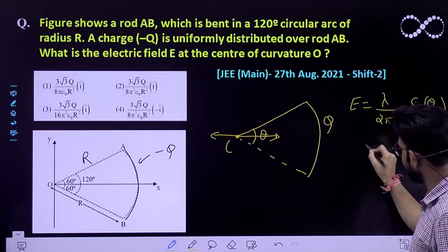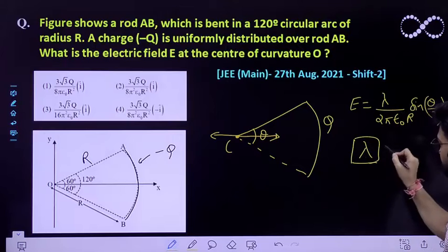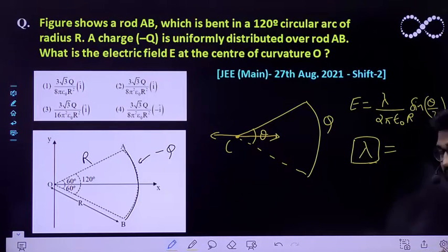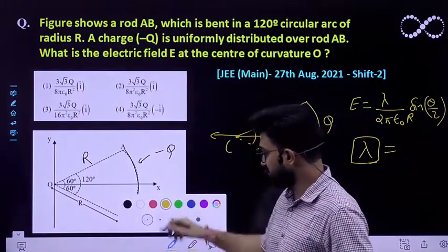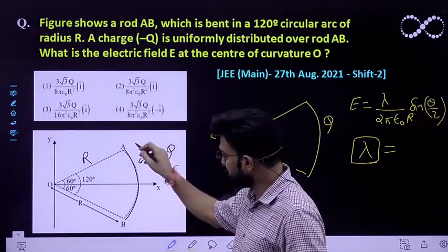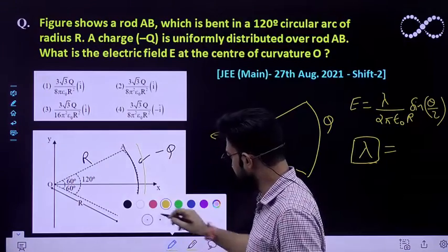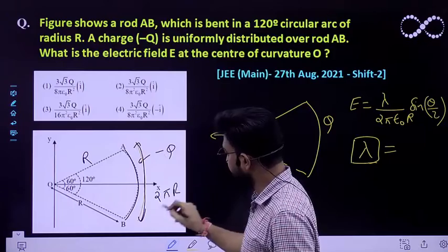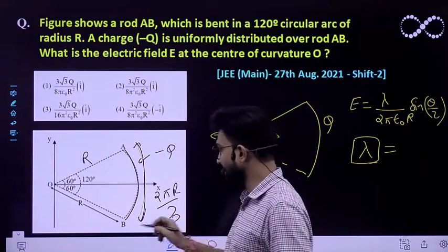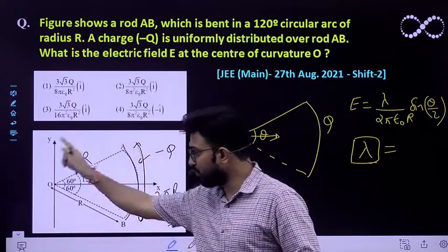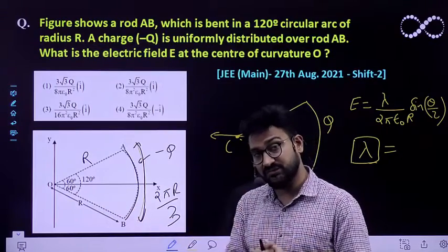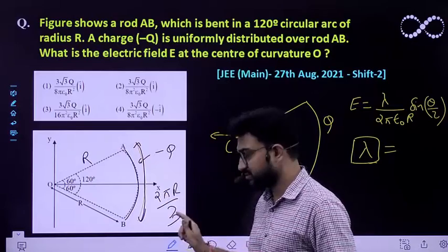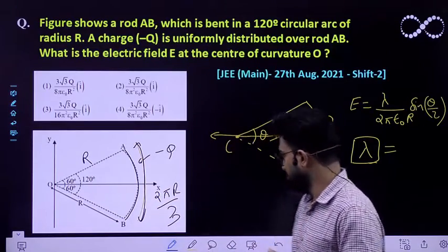This whole charge has been distributed to a length of what? What is the length of this arc? It is equal to 2 pi R by 3, because the angle subtended is 120 degrees, and for the whole 360 degrees the circumference would be 2 pi R. So this much of length would be 2 pi R by 3, which is one third of the whole circumference.